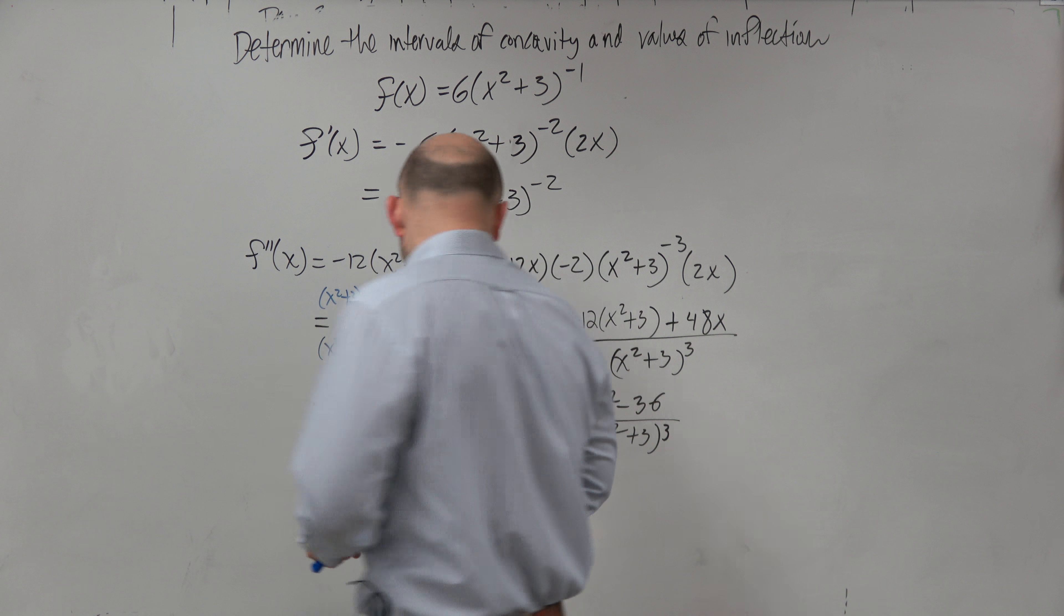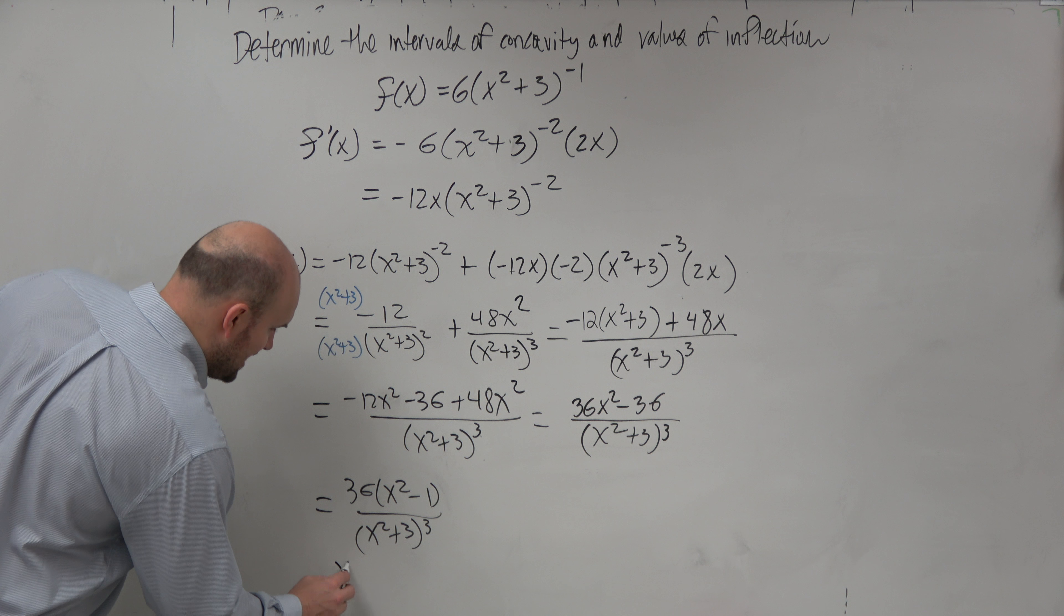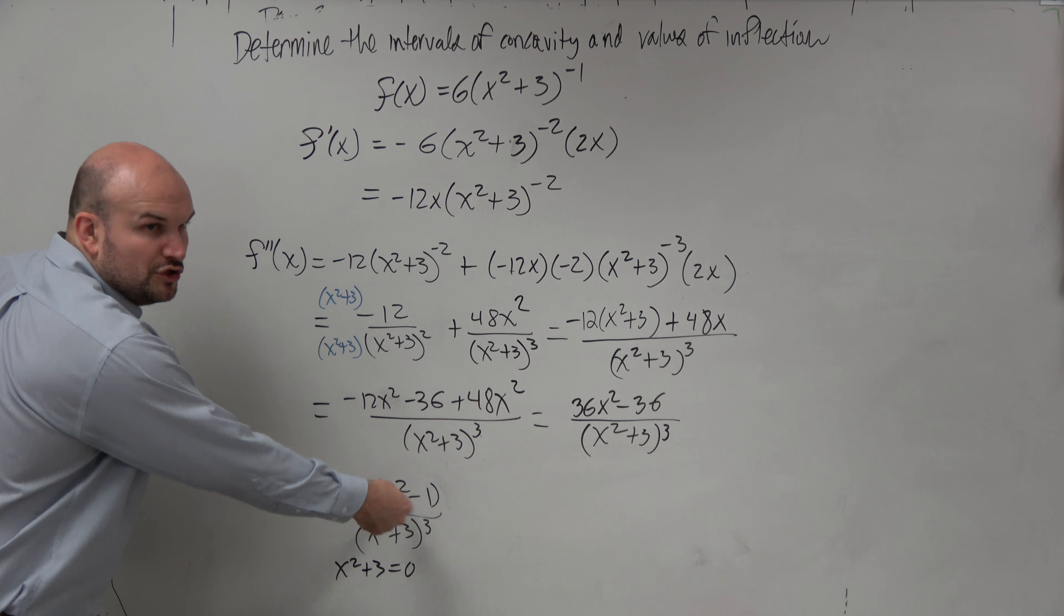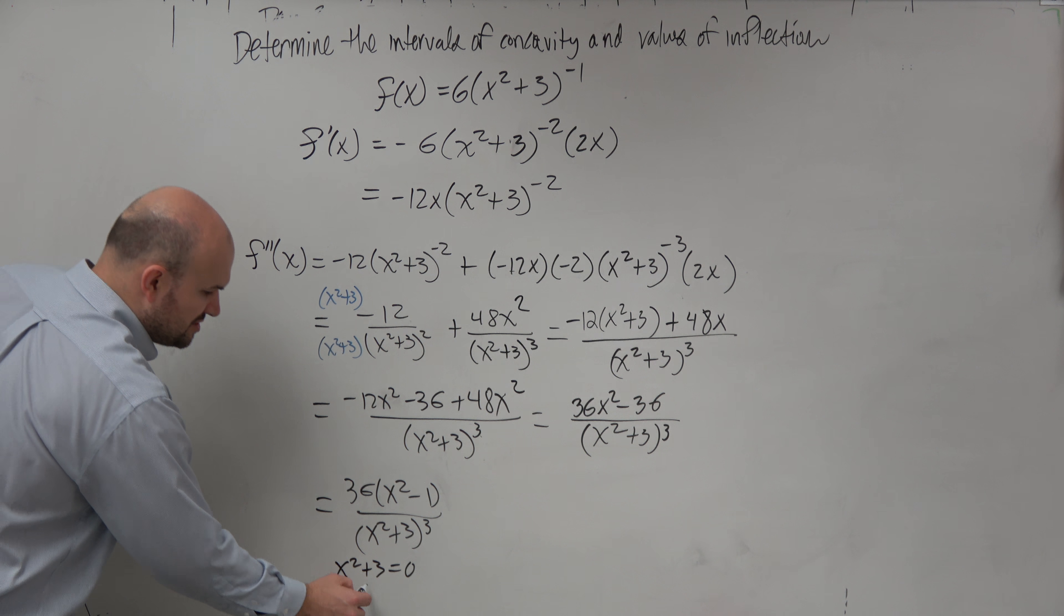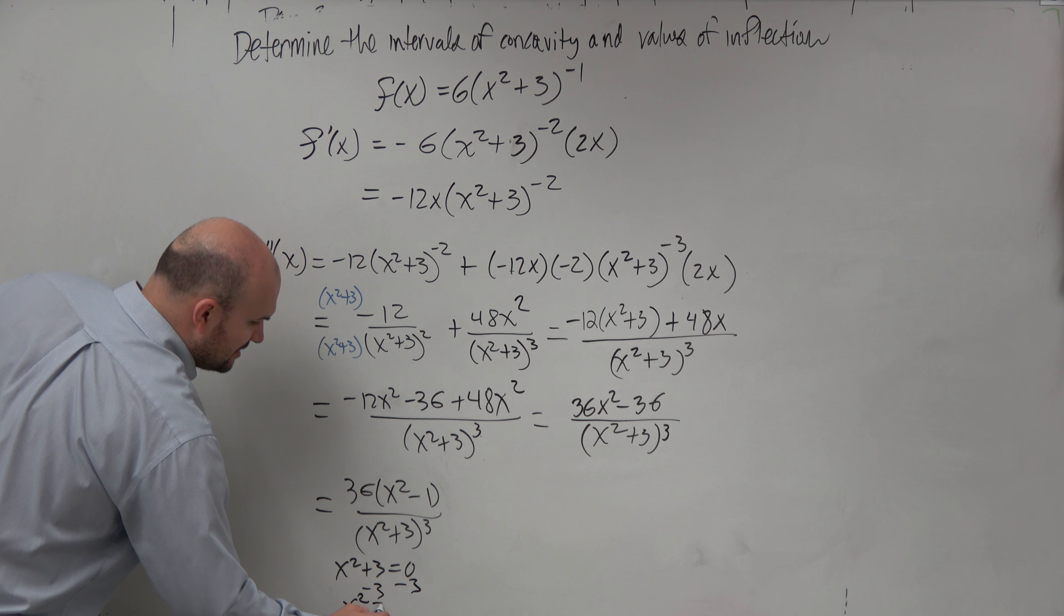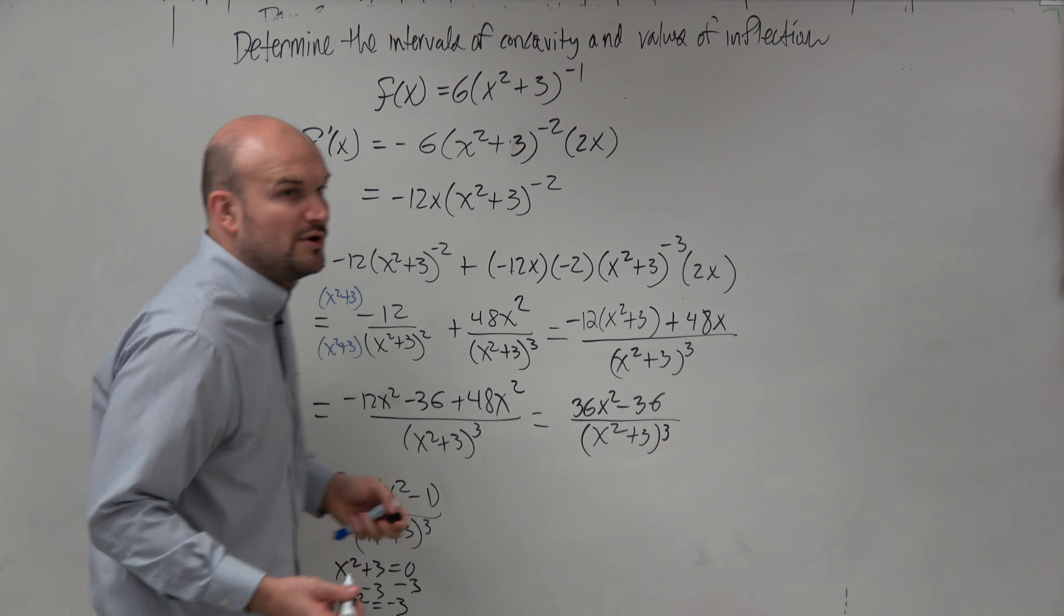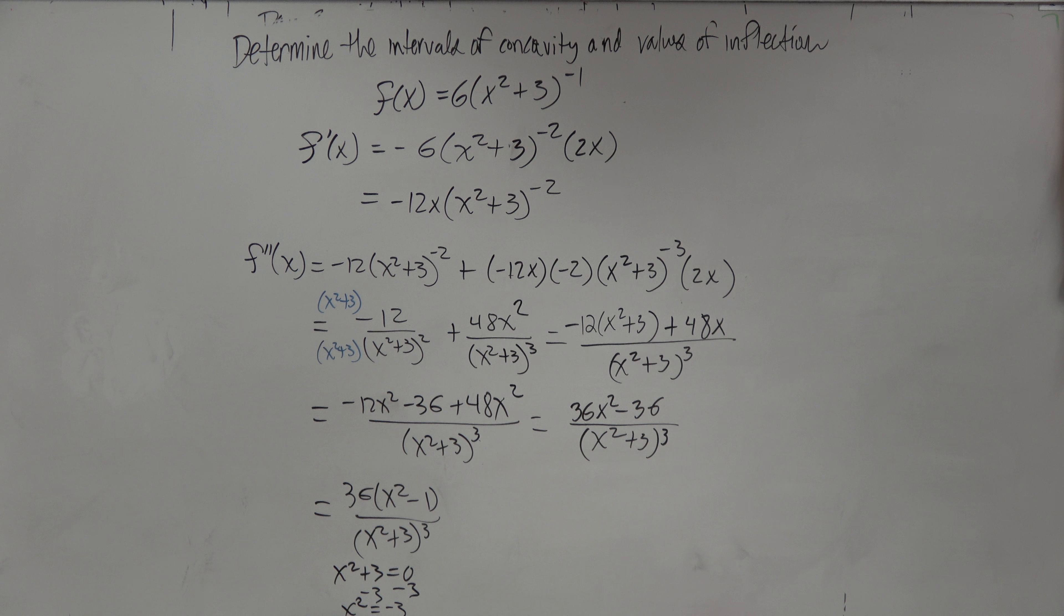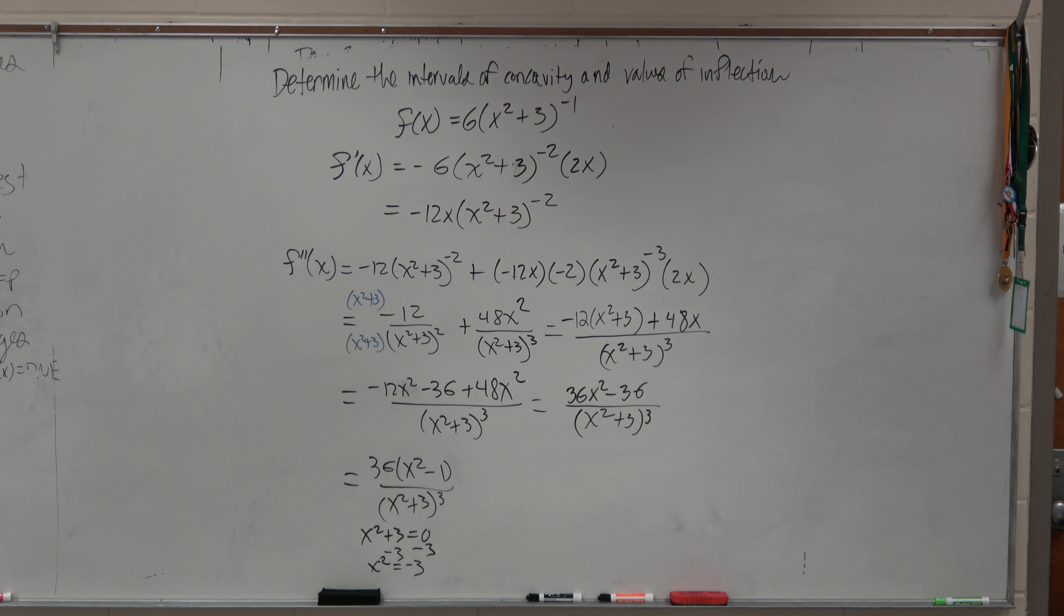If you're not sure by visual inspection, set the denominator equal to 0. Obviously, if you cube root both sides, you're just going to get this. When you subtract 3, you have x squared is equal to negative 3. You can't take the square root of a negative number in the real number system. So therefore, there is no values where the second derivative is going to be undefined.